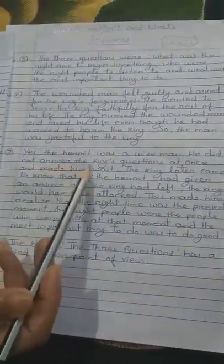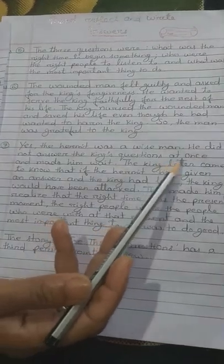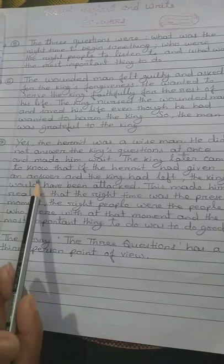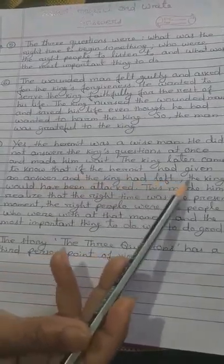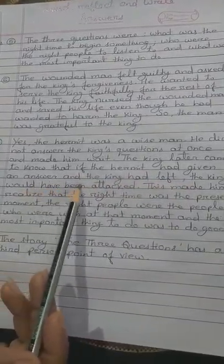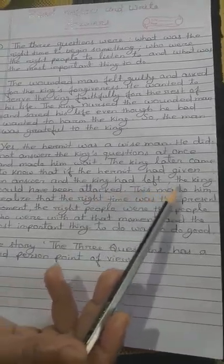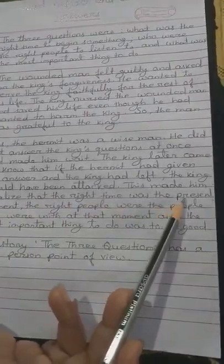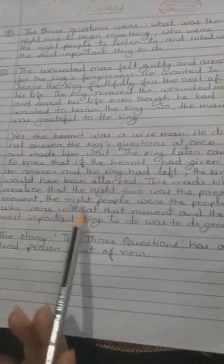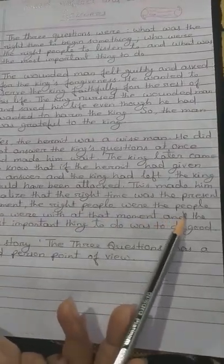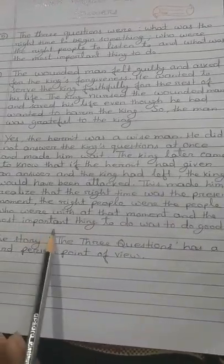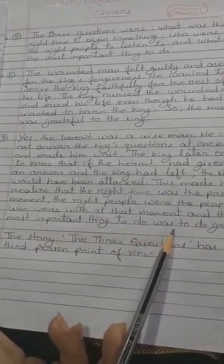He did not answer the king's questions at once and made him wait. The king later came to know that if the hermit had given an answer and the king had left, the king would have been attacked. This made him realize that the right time was the present moment, the right people were the people who were with at that moment and the most important thing to do was to do good.